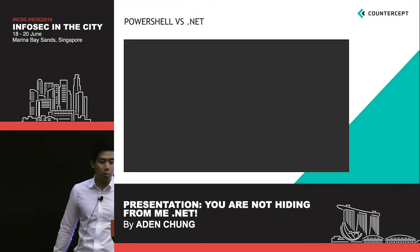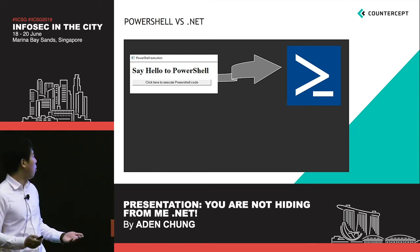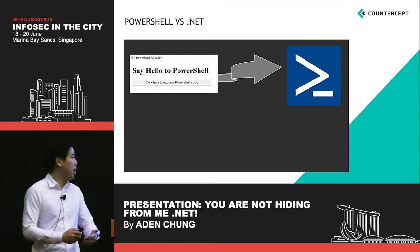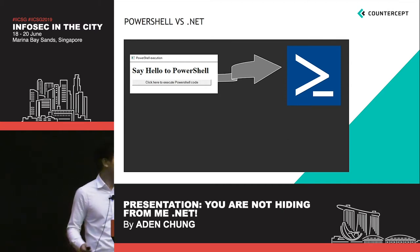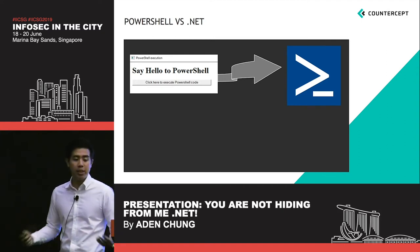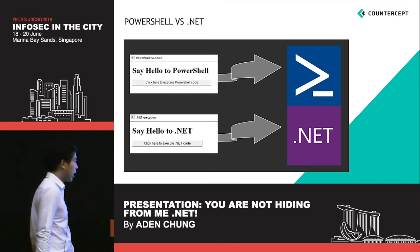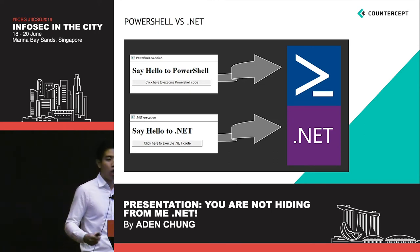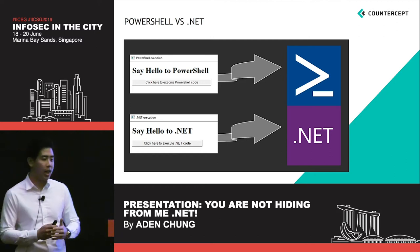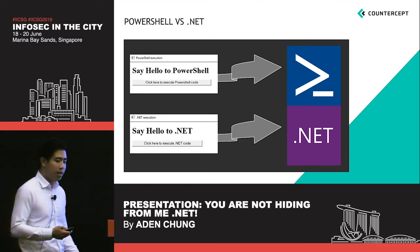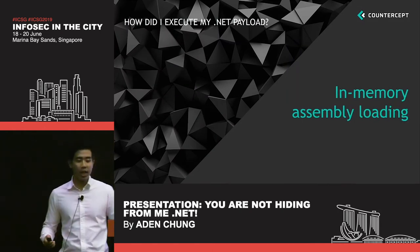To summarize what I demonstrated: for the PowerShell payload, the MSHTA process spawned a PowerShell process, which was used to write a registry key and pop a message box. With the .NET file, however, I used the MSHTA process to call the .NET framework directly. So the question is: how did I actually achieve this? And this is something known as an in-memory assembly loading technique.